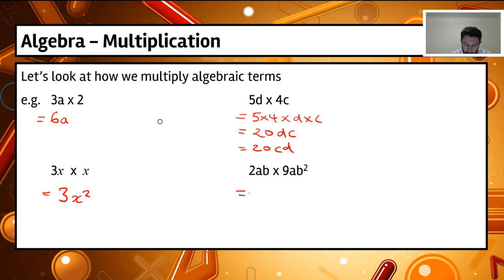And then our final one, this one looks a little bit complicated, but it's not. If we have a look at this, we've got 2 times 9, so we do our numbers first, so that gives me 18.